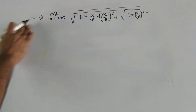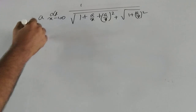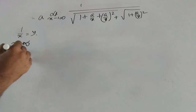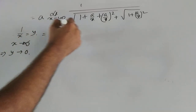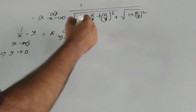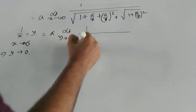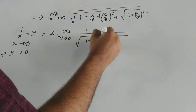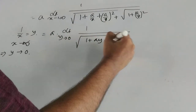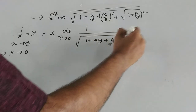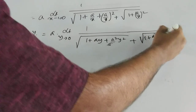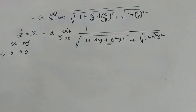Now, since x tends to infinity, 1/x obviously tends to 0. So let me do a substitution: let y = 1/x. When x tends to infinity, y tends to 0. Transforming the expression into y, it becomes a times limit y tends to 0 of 1 divided by square root of (1 + ay + a²y²) plus square root of (1 + a²y²), because 1/x = y and (1/x)² = y².